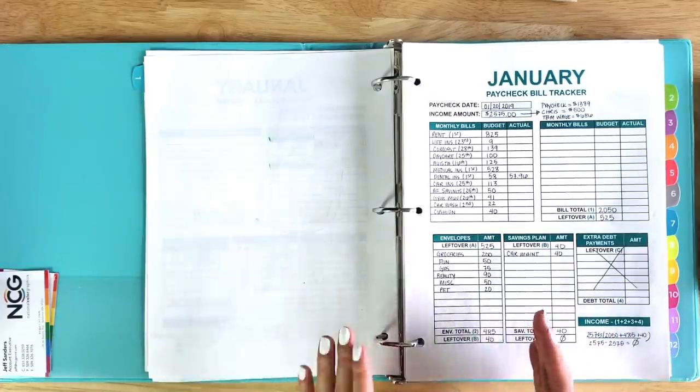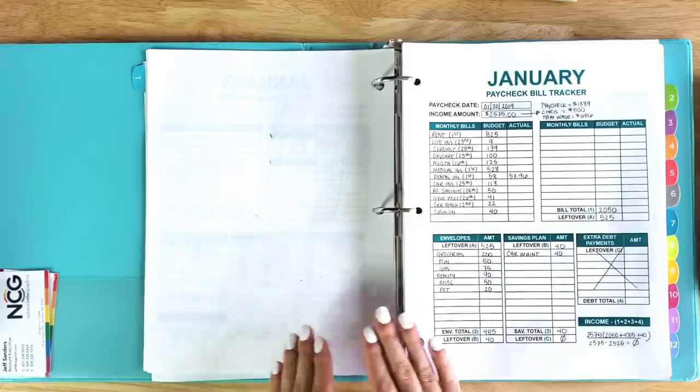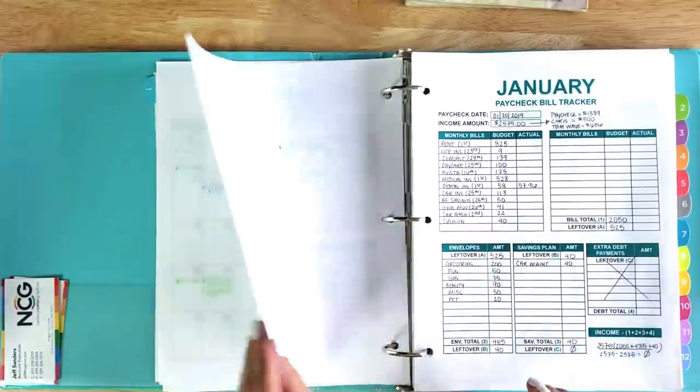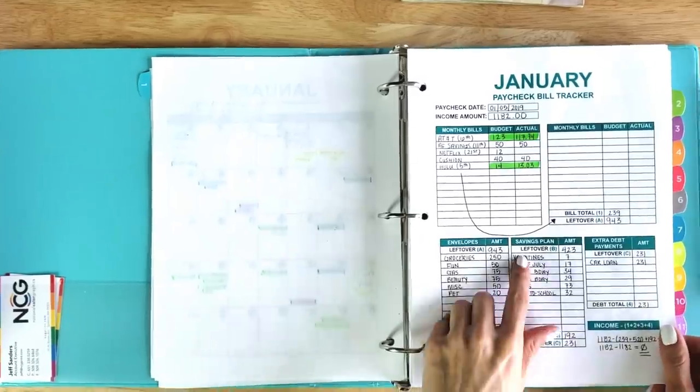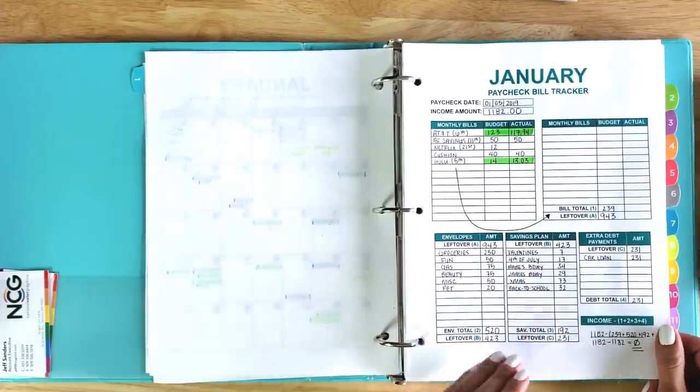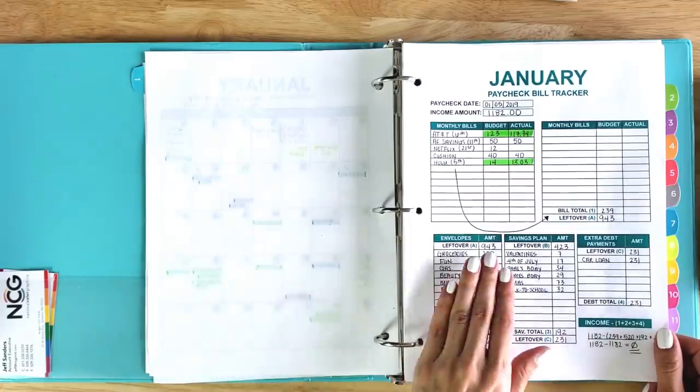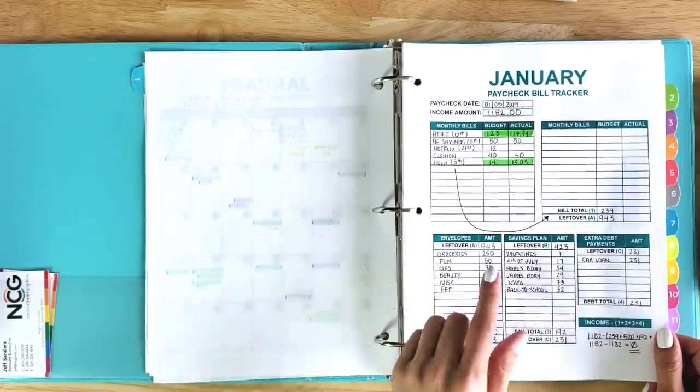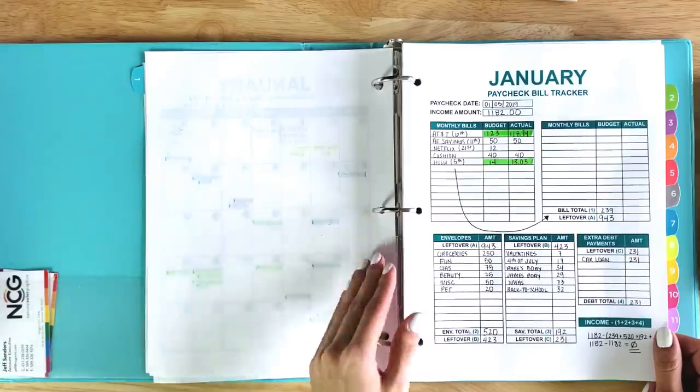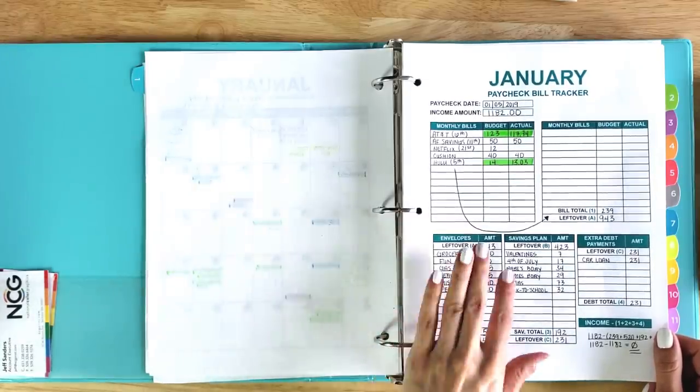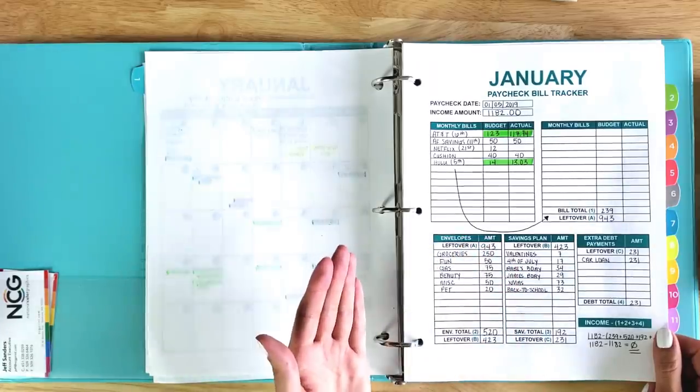Usually, for my car maintenance fund, I like to do $20 from each paycheck. But, I did not include it on my budget last time because I decided to take care of my sinking funds for this first budget on January 5th. I like to save a little bit every month for specific events or holidays, so I have cash available, and I don't feel pressured to use my credit card when these types of expenses come up.